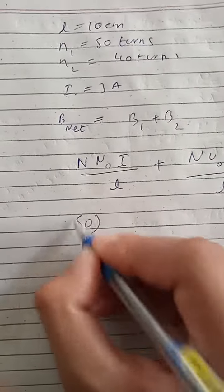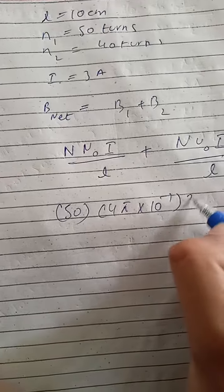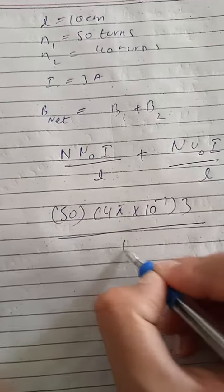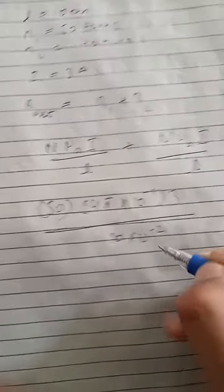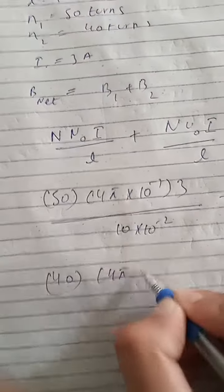So this will be same. So μ₀ is 50 and this is the value is the same and the current is the same so length is the same. Okay.